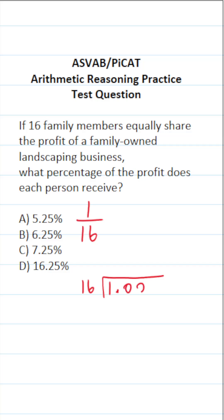So that's going to prompt me to add a decimal and a couple of zero placeholders. I'm going to bring the decimal into my answer. And since 16 did not go into 1, I'm going to put a 0 above the 1.